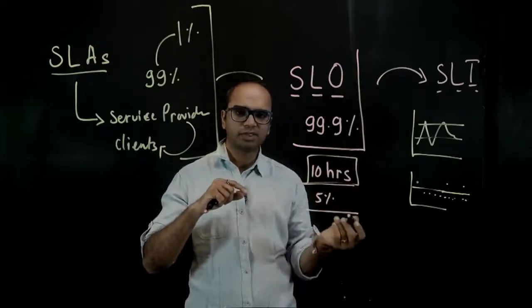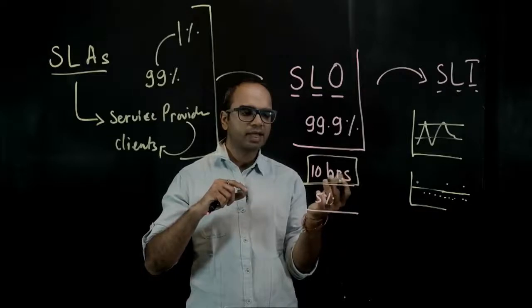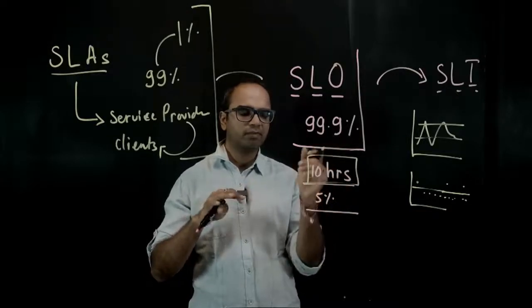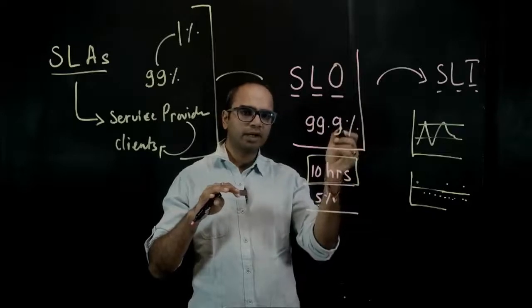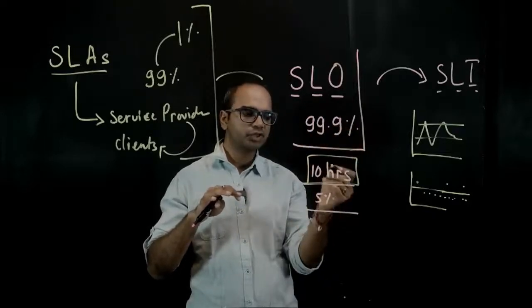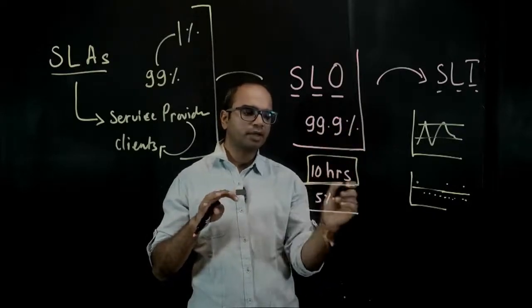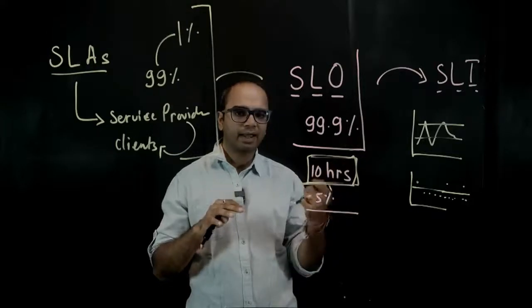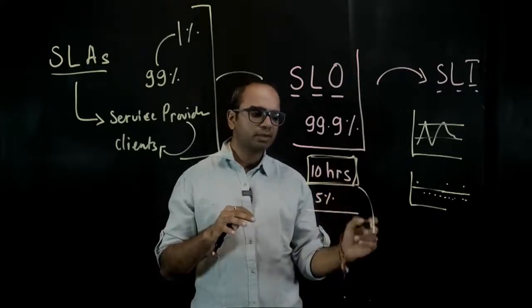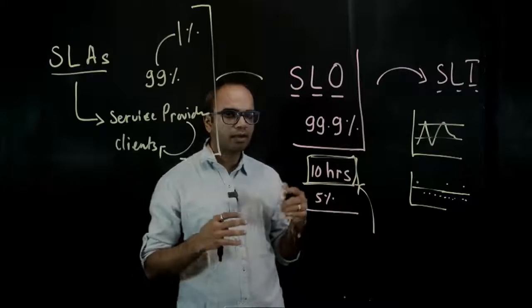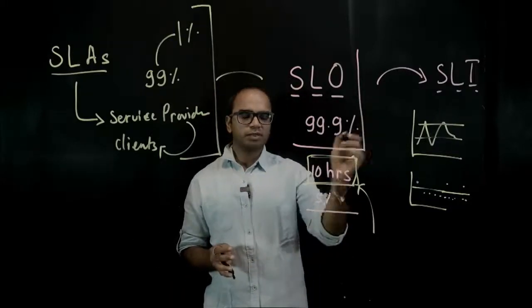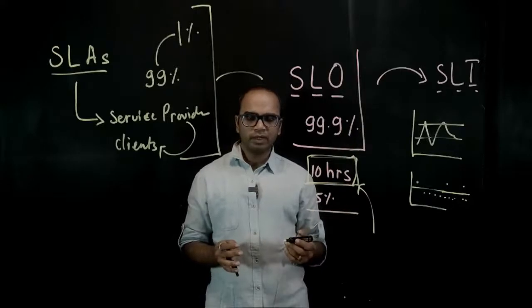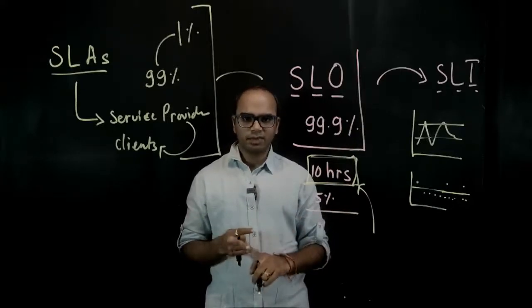Based on that you create something called error budgets. Error budgets are the leeway. So ten hours is my error budget for the three months time, for example, because I have a guarantee of let's say 99.9% which leaves me with very little. So 100 minus 99.9% is what I calculate, and based on that I come up with the downtime that I can afford. Now this downtime is important because it's important to update your systems.